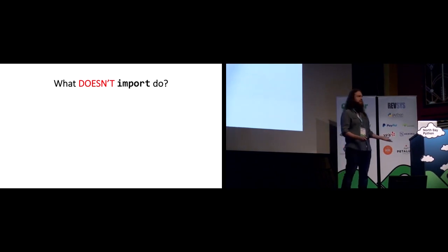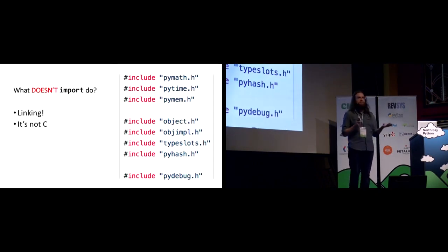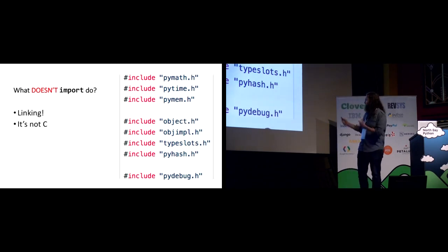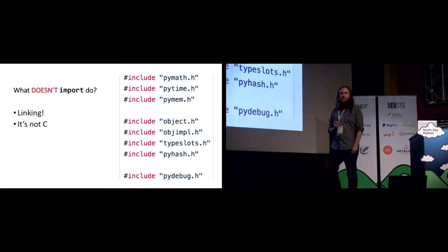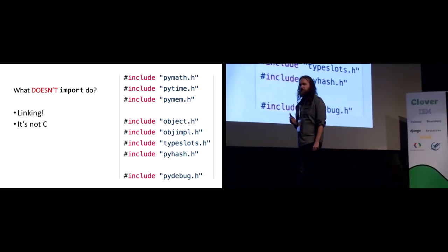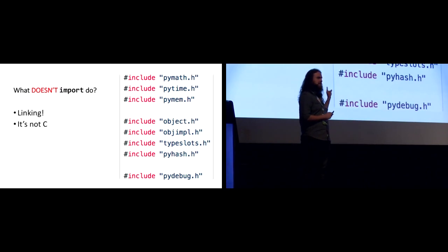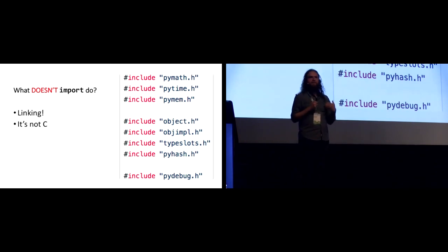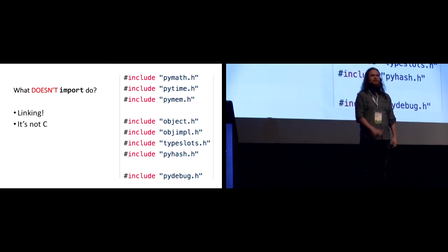Before I tell you what import does, let me tell you what it doesn't do, because for a long time I had a vague and incorrect impression, probably based on an analogy to other languages. In some languages like C, if you want to include some code that's not in your main source file, you use something like an include directive. As you can see in the screenshot taken from the CPython interpreter — which is written in C — this looks an awful lot like a Python import statement but behaves very differently.